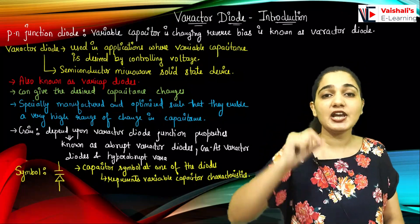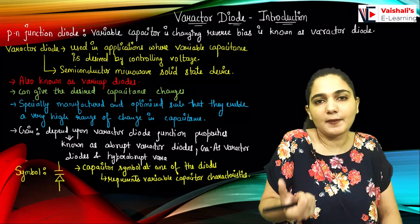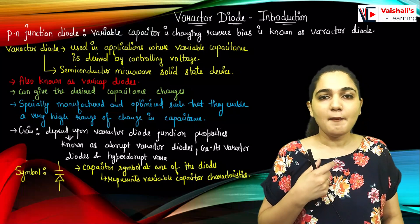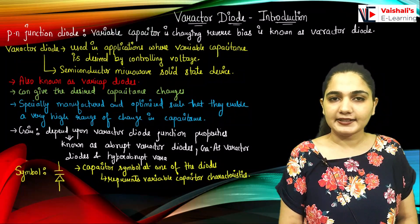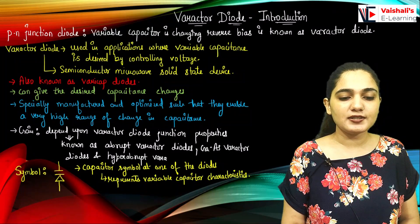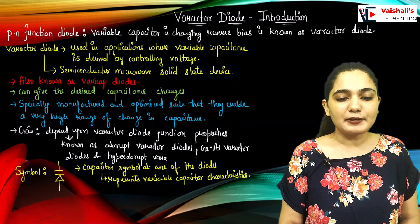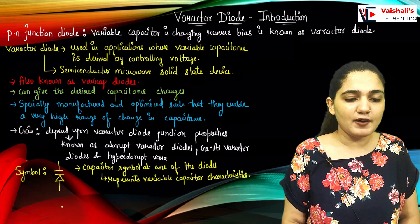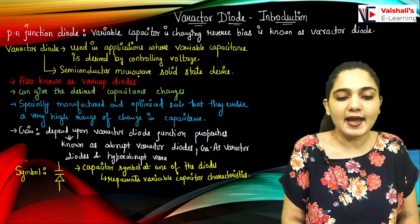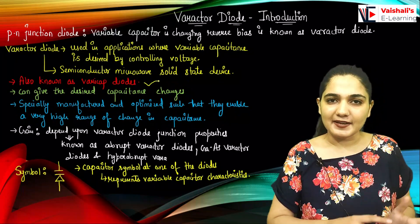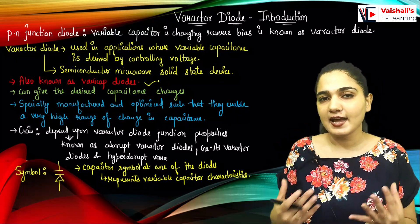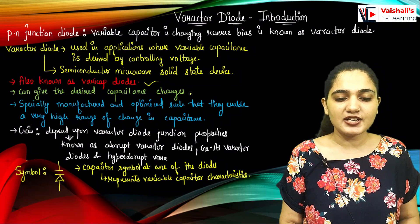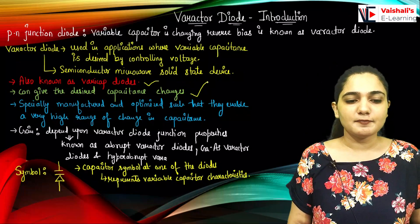With the help of voltage, what I am changing is the capacitance value, and I am controlling it. According to my requirement, I can have a particular capacitance value with the help of the varactor diode. It is used in semiconductor microwave solid-state devices, among various other applications. It is also known as the varicap diode, which means variable capacitance. So varactor diode and varicap diode are the same thing. It can give the desired capacitance change on the application of the reverse bias voltage.